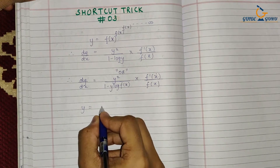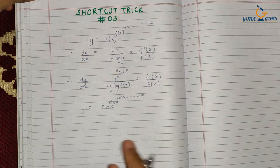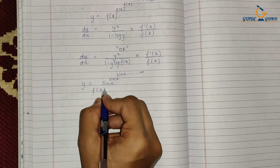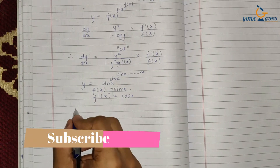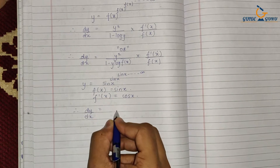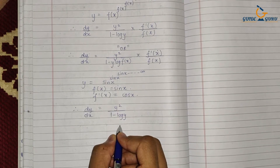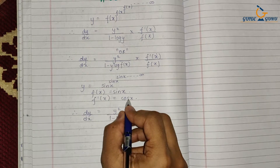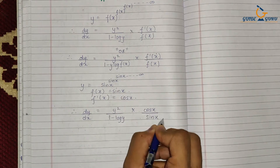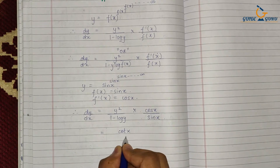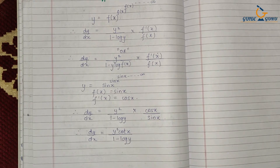Now consider the function y = sin(x)^sin(x)^sin(x) going on till infinity. Here the function f(x) is sin(x), so f'(x) = cos(x). Writing the derivative using the first form: dy/dx = y² upon (1 − log y) into cos(x)/sin(x), which is cot(x). So dy/dx = y²·cot(x) / (1 − log y).